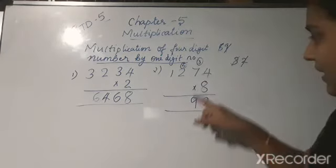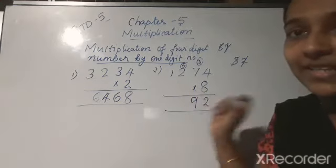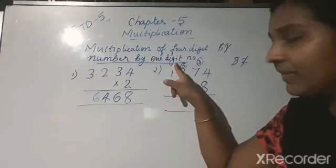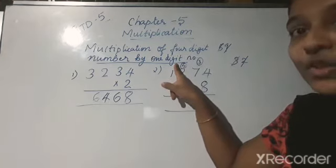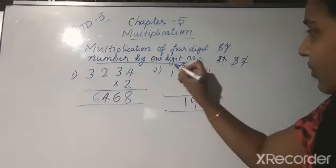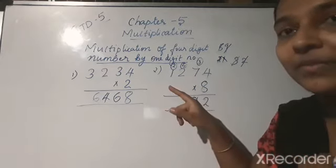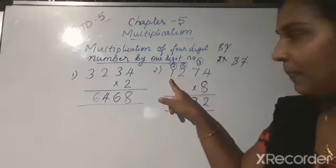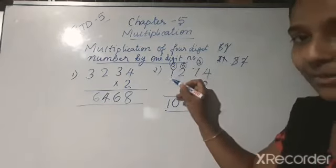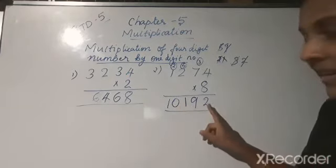Now multiply 8 with 2 — 8 twos are 16. Add the carry-over 5: 16 plus 5 is 21. Write 1 here and carry 2 to the next place. Now multiply 8 with 1 — 1 eight is 8. And 8 plus 2 is 10. Since this is the last number, you can write the whole number 10 here. So the answer is 10,192. This is the product of this number.